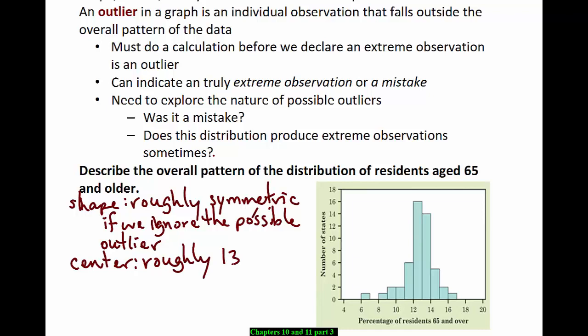And how about spread? We don't really have any tools in our toolkit yet to talk about how spread out these data are, these observations are. So we'll just use our gut. The total spread ranges from about 6 up to 17 percent. Ranges from 6 to 17.